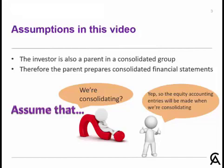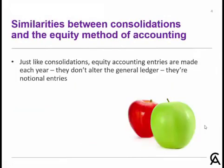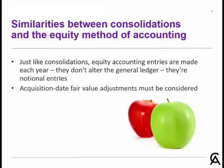So, I want you to assume that we're consolidating. This means that our equity accounting journal entries are going to be recorded at the time when we're doing the consolidation. That means the equity accounting entries are going to be notional journal entries, just like the consolidation journal entries. Those equity accounting entries are notional entries — they're not affecting the general ledger, and therefore they don't carry forward from year to year.